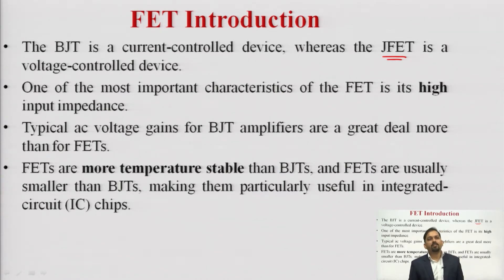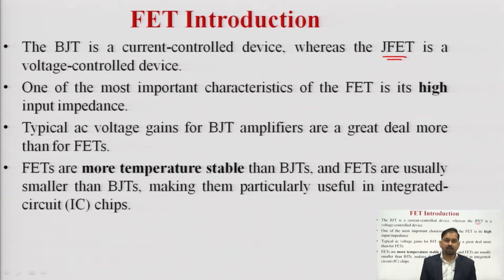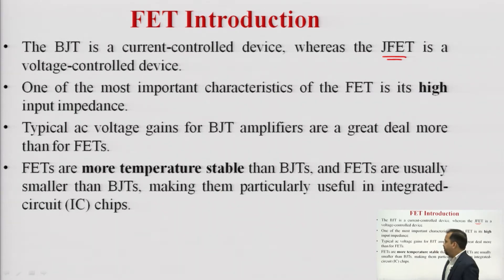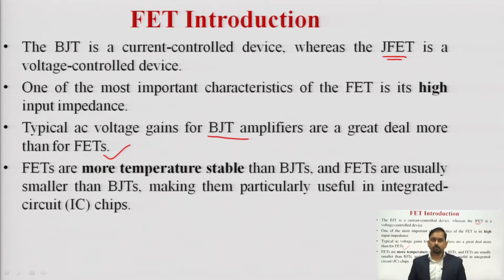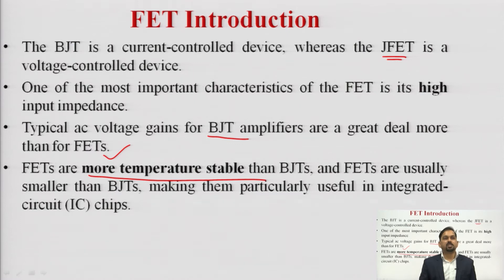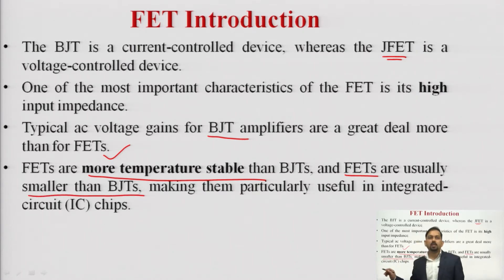The most important characteristic is that FET has high input impedance. High input impedance is very advantageous because if a device has high input impedance, then it can be used as a good amplifier. Typically, AC voltage gain for BJT is more than that of FETs, so BJT has advantages in voltage gain, but FETs are more thermally stable whereas BJT are not. FETs are also smaller in size compared to BJT, which is why FETs can be used particularly for manufacturing integrated circuit chips.